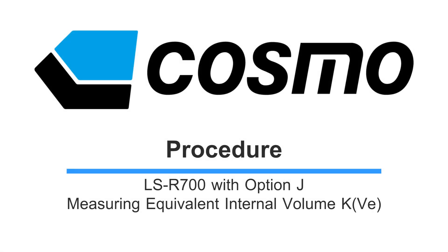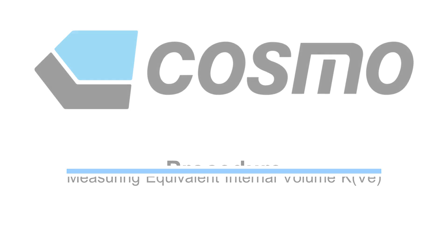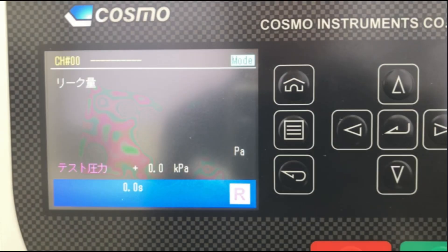Cosmo Instruments LS-R700 with Option J. This video explains how to measure the equivalent internal volume KVE using a leak master for the LS-R700 with Option J.